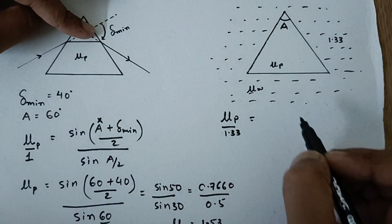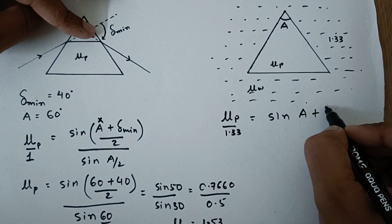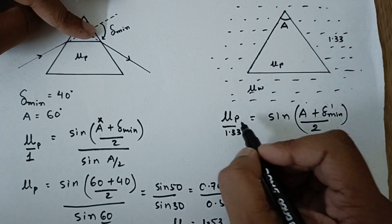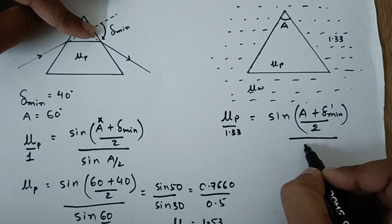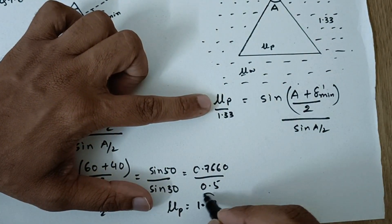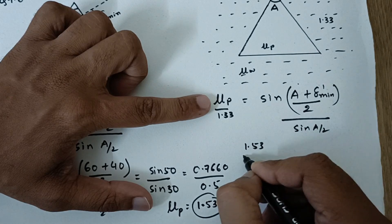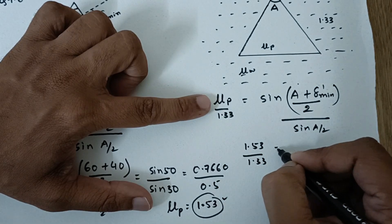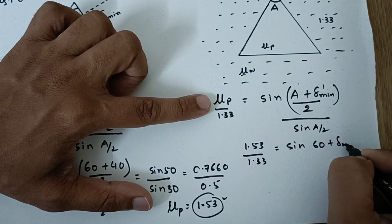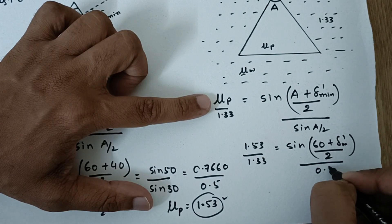So like this and that will be equal to again sin A plus now I should say delta minimum dash, because now it will change upon sin A by 2. So this we have already found from here. So I am going to substitute this value 1.53 divided by 1.33 that is equal to sin 60 plus delta minimum dash by 2. We do not know what is delta minimum dash right now, divide by 2 upon sin 30 that is 0.5.